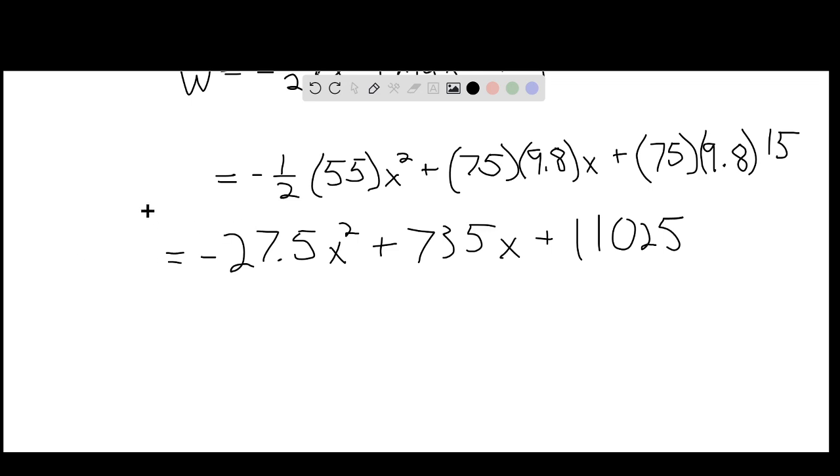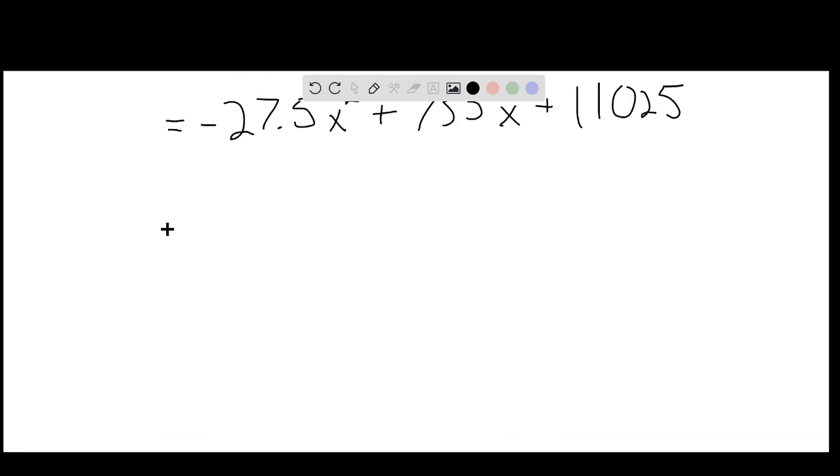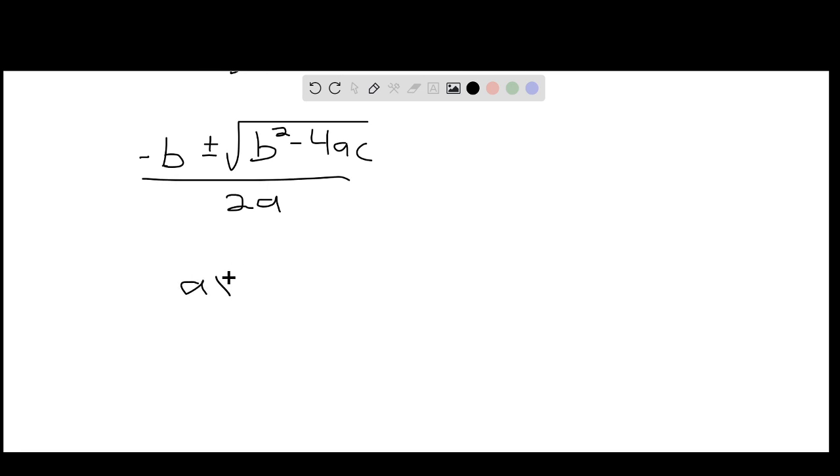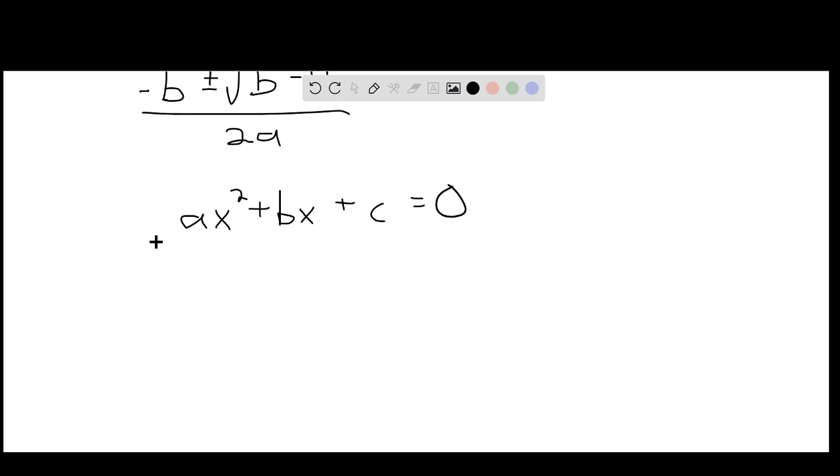For which we can use the quadratic formula to solve. Recall that the quadratic formula is given by negative b plus or minus square root of b squared minus 4ac, all over 2a, where the coefficients a, b, and c are determined by a quadratic equation in the form ax squared plus bx plus c equals zero. Identifying the coefficients of each term in our equation for the work done and substituting into the quadratic formula, we obtain the following.